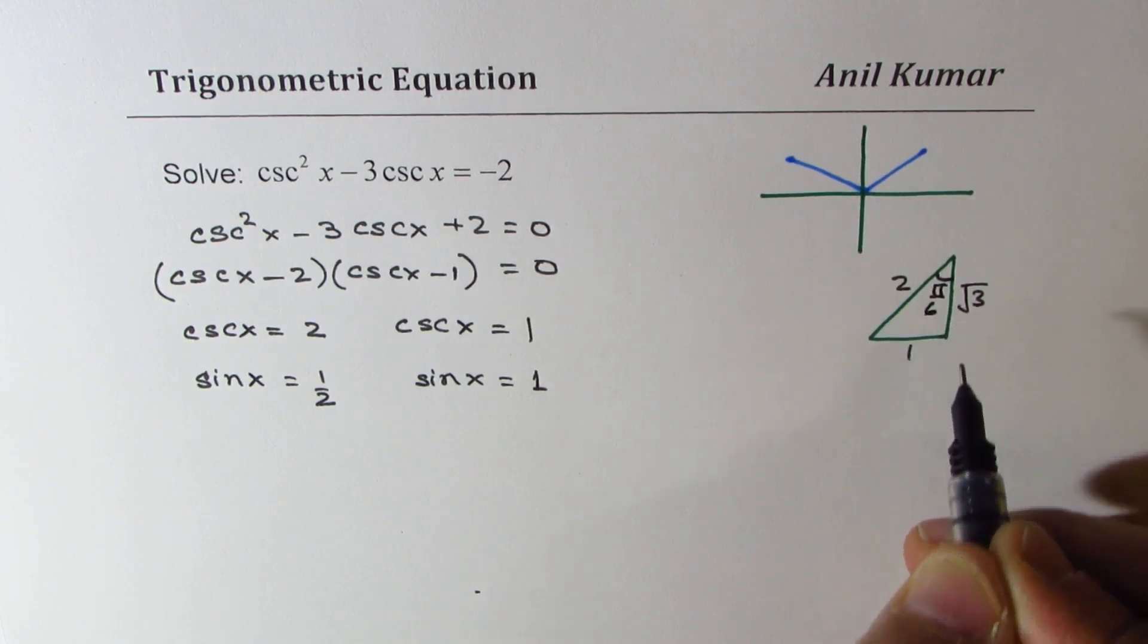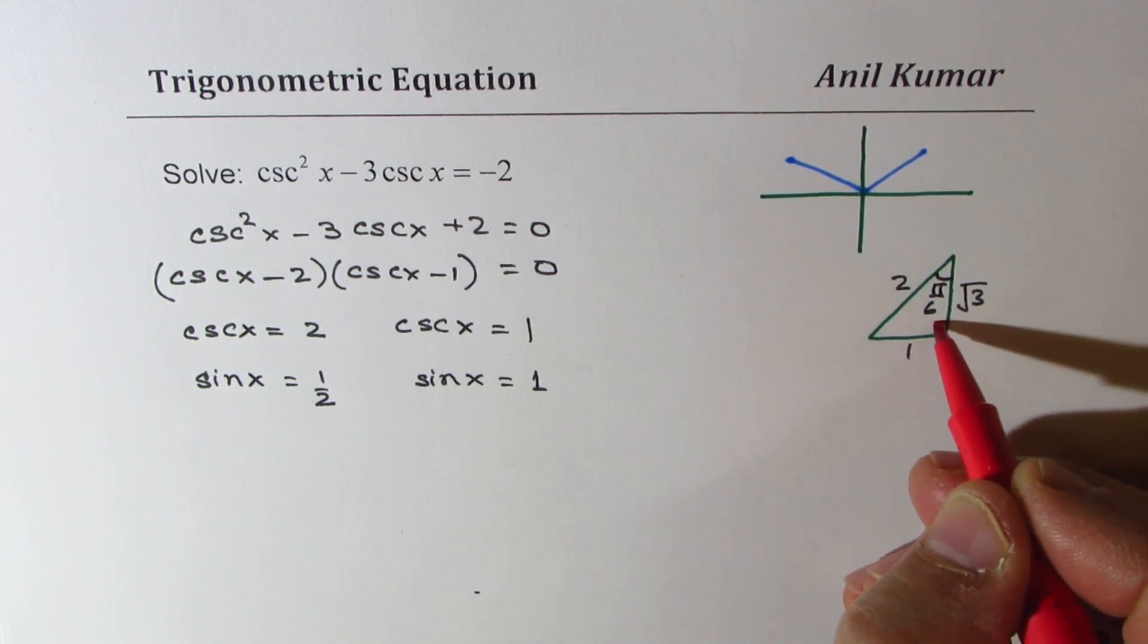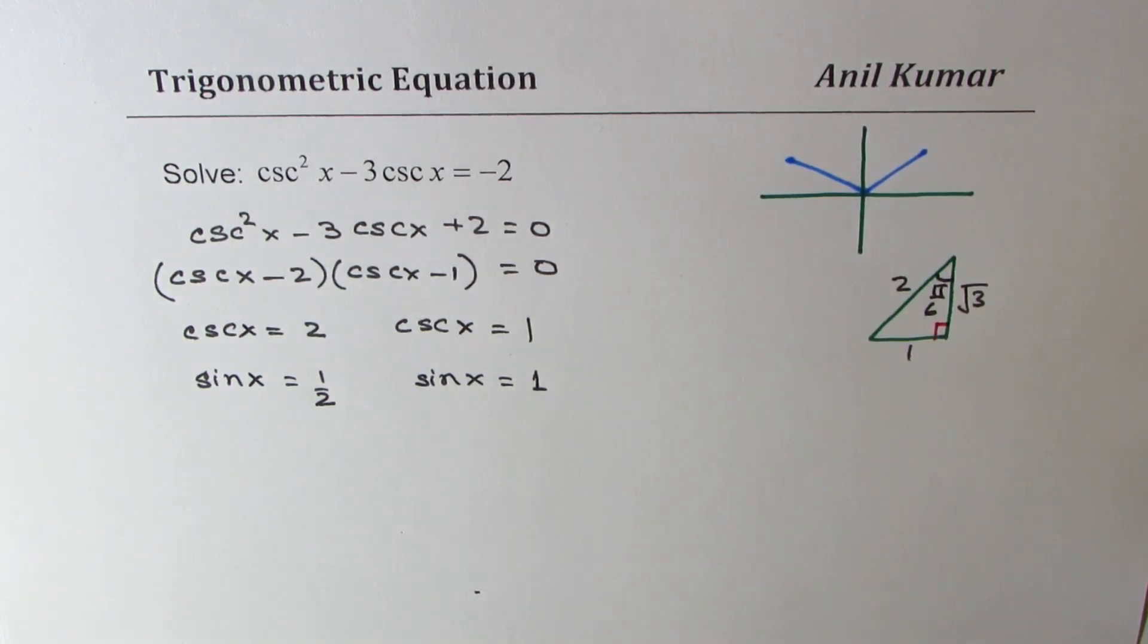So we know these two sides for the angle. Let me write this as pi by 6. So for pi by 6, we get sine x is half. Some of you who are working in degrees, for them it's 30 degrees.